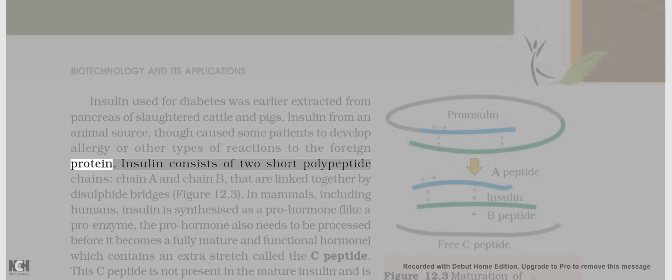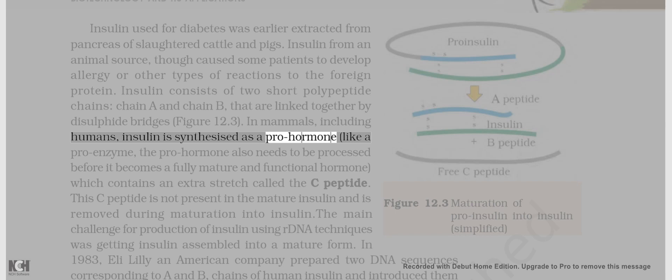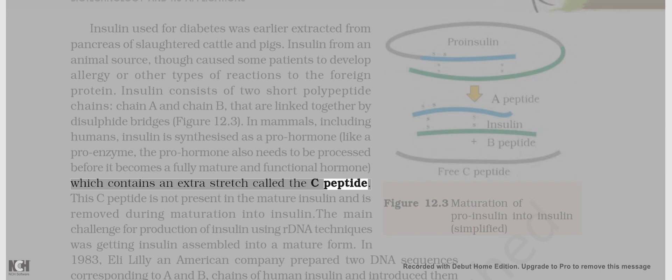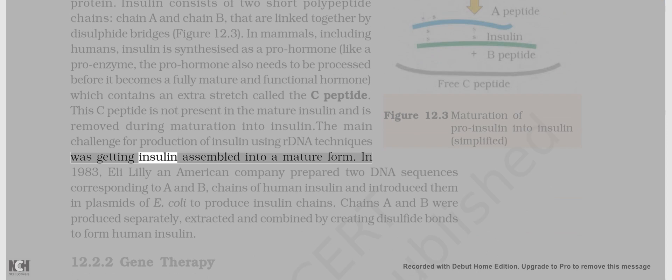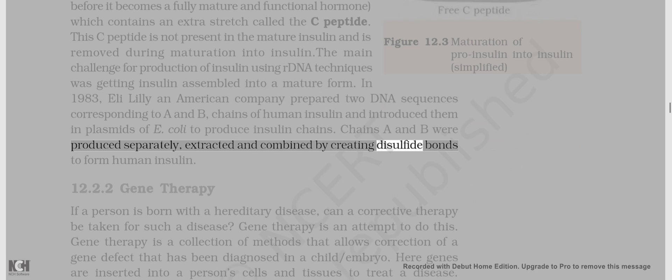Insulin consists of two short polypeptide chains, chain A and chain B, that are linked together by disulfide bridges. In mammals, including humans, insulin is synthesized as a pro-hormone — like a pro-enzyme — the pro-hormone also needs to be processed before it becomes fully mature and functional, and contains an extra stretch called the C-peptide. This C-peptide is not present in mature insulin and is removed during maturation. In 1983, Eli Lilly, an American company, prepared two DNA sequences corresponding to A and B chains of human insulin and introduced them in plasmids of E. coli to produce insulin chains. Chains A and B were produced separately, extracted and combined by creating disulfide bonds to form human insulin.